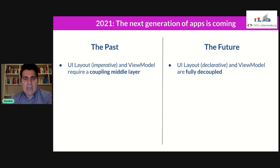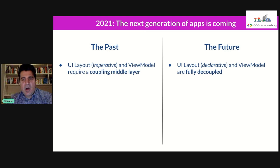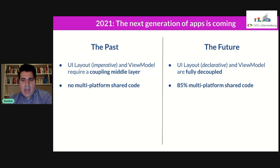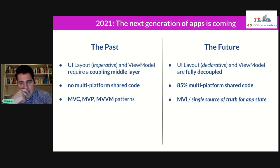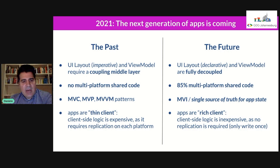To summarize: in the past, UI layout and view model required a coupling middle layer; in the future, they will be fully decoupled. In the past, we shared no code; in the future, we'll share 85%. In the past, we had MVC, MVP, MVVM; in the future, we'll have MVI with a single source of truth for app state. In the past, apps were thin clients because client-side logic was expensive; in the future, we'll have rich clients as client-side logic is inexpensive.